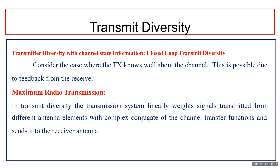Transmit diversity can occur with channel state information as well as without channel state information. Channel state information means the channel response should be either known or unknown to the transmitter. Channel state information means the channel response is known.